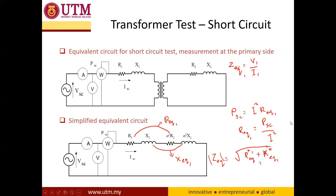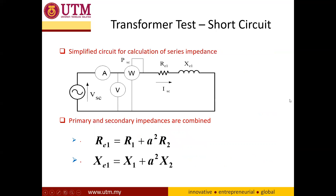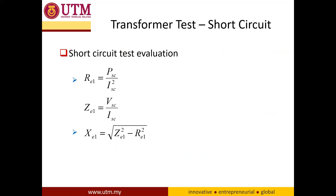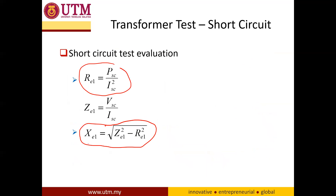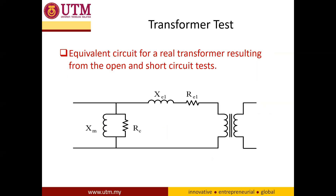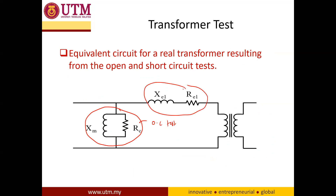That is straightforward as well. These are the equations involved: R equivalent can be obtained from the power equation and X equivalent from the impedance equation. This is the equivalent circuit for a real transformer that results from the open and short circuit tests — the RC and XM are obtained from the open circuit test, and R equivalent and X equivalent from the short circuit test.